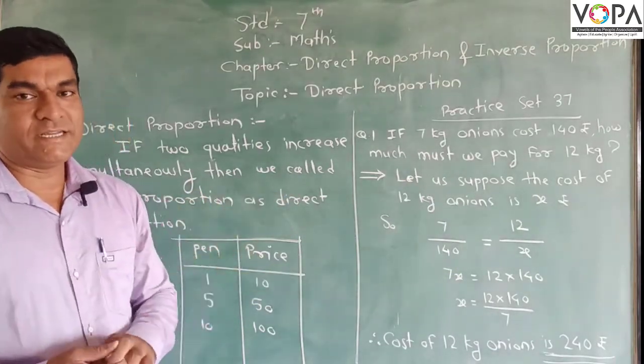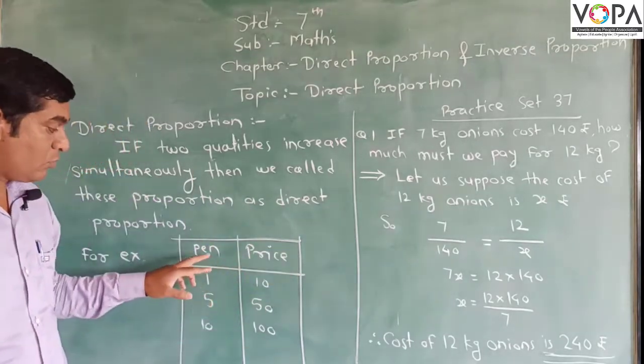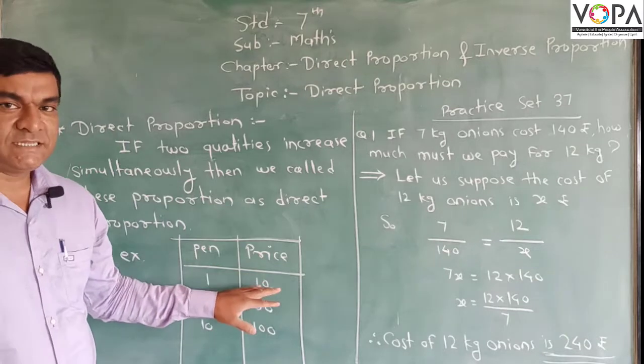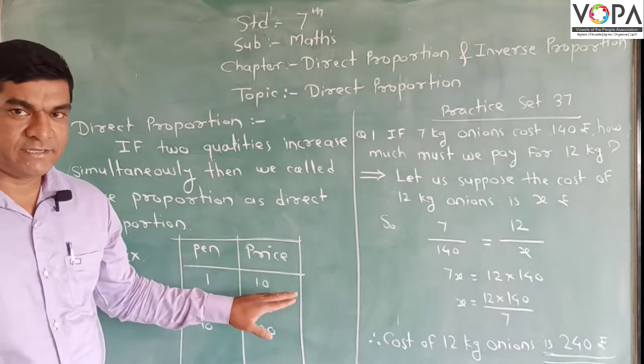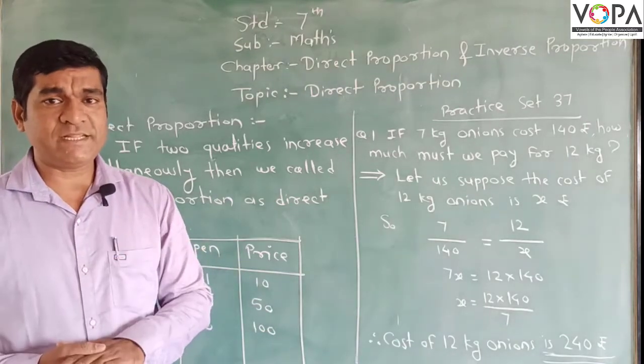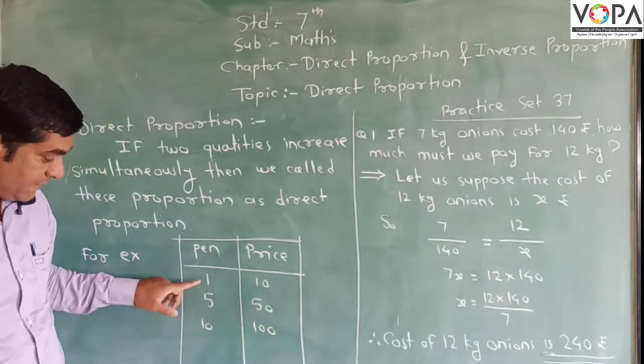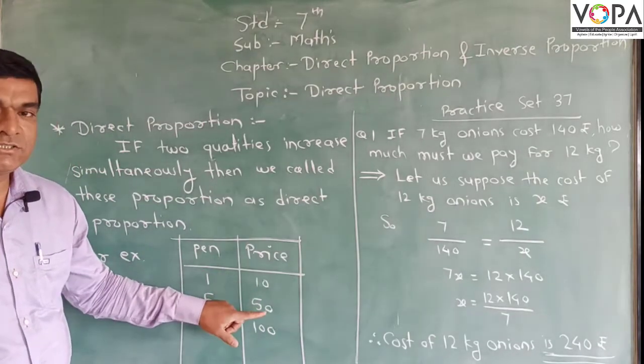We take two quantities like this: one is the pen and second is the amount. Suppose the cost of one pen is rupees 10. Then, if you buy 5 pens, how much amount you want to pay? Rupees 50. See, the number of pens increased, and the amount is also increased.